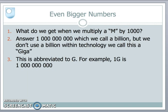What happens if we multiply our mega — capital M — by a thousand? We get a thousand times a million, giving us one followed by nine zeros. We don't use the word billion in technology; we call this a giga, meaning giant. So one followed by nine zeros can be abbreviated simply as 1G. One giga means one followed by nine zeros.